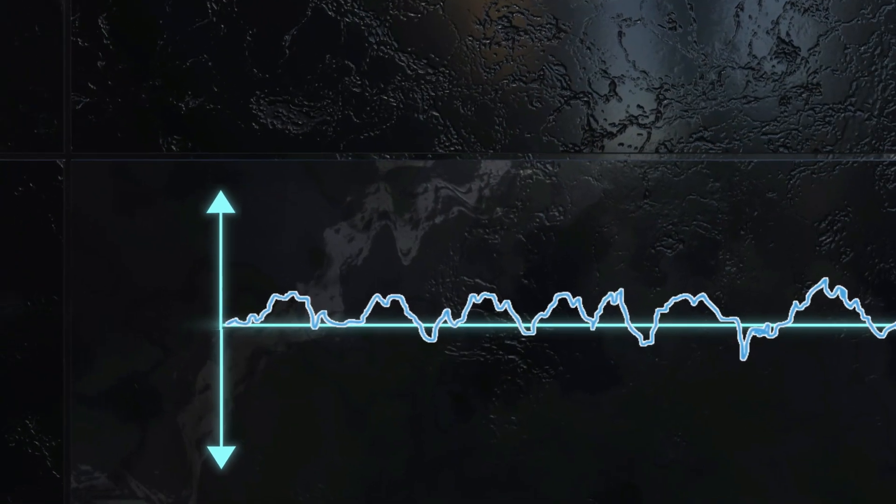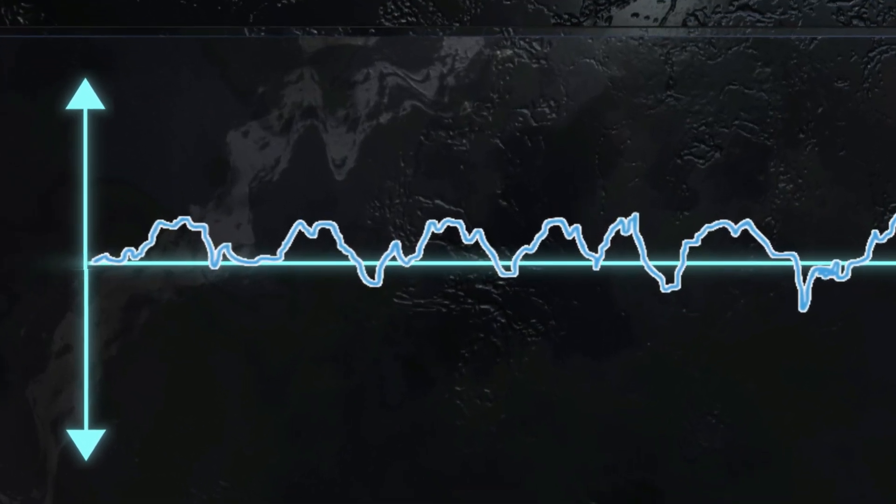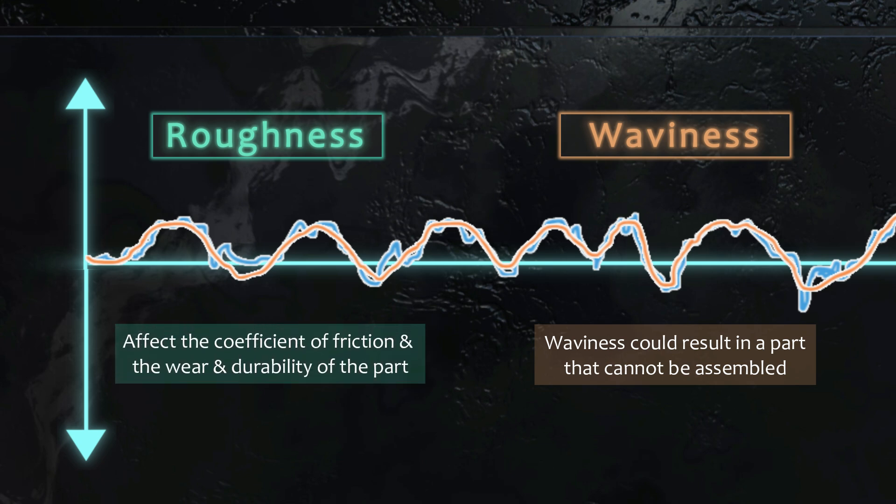We make this distinction because these two deviations have different consequences on the function. While waviness could result in a part that cannot be assembled, roughness does not influence the assembly but the coefficient of friction and the wear and durability of the part.